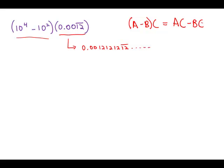So in this particular case, that will be 10 to the fourth times the decimal, minus 10 to the second times the decimal. So let's figure those two out separately.